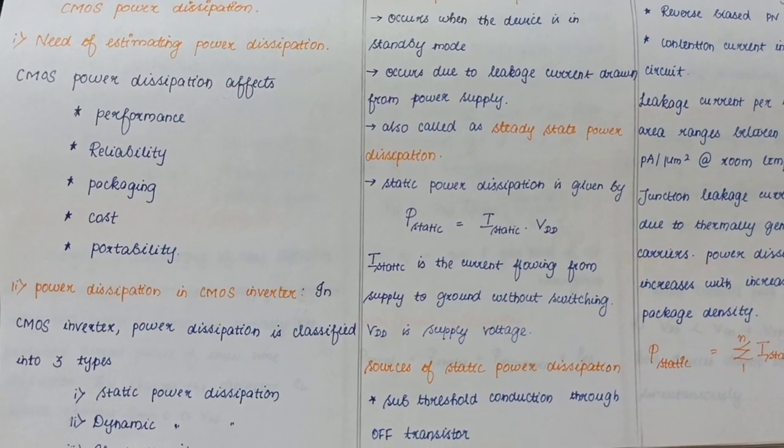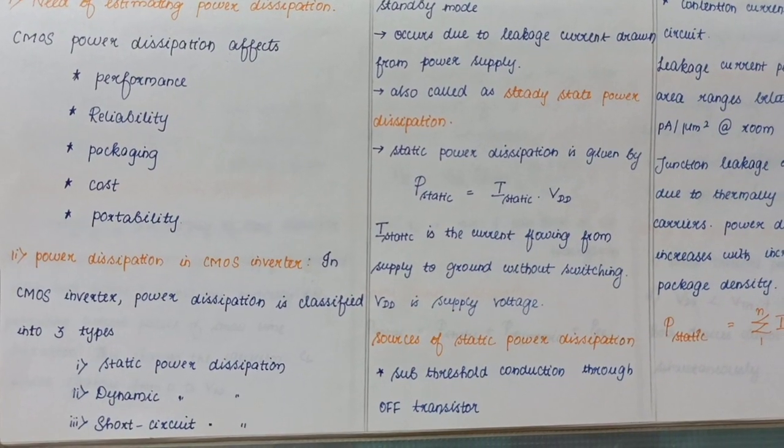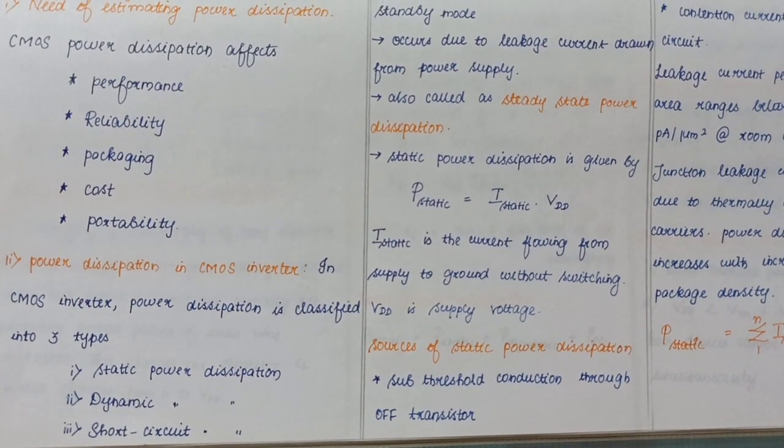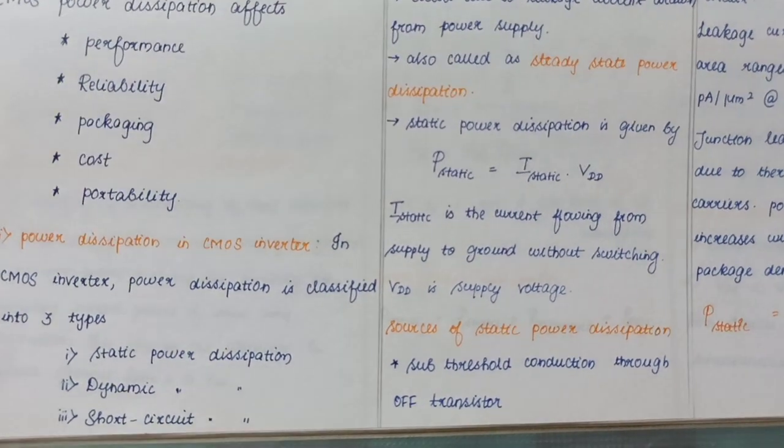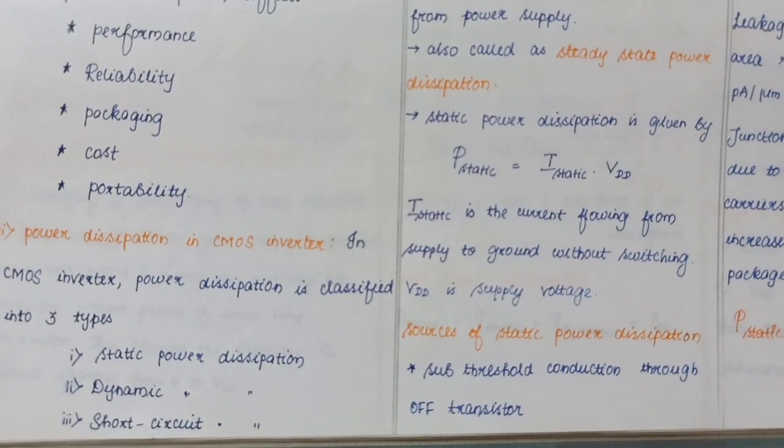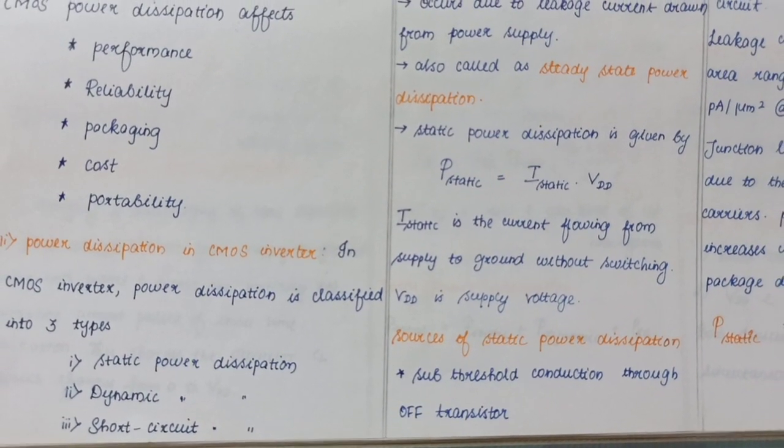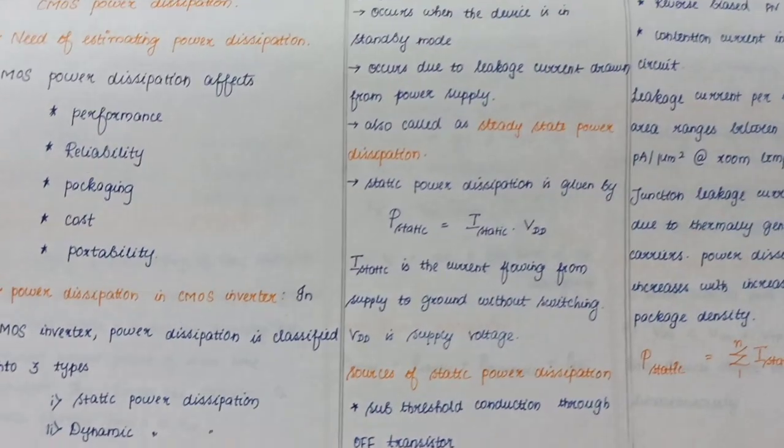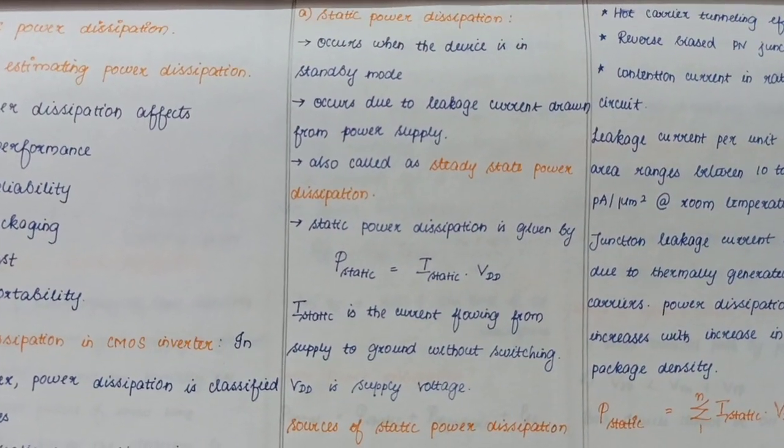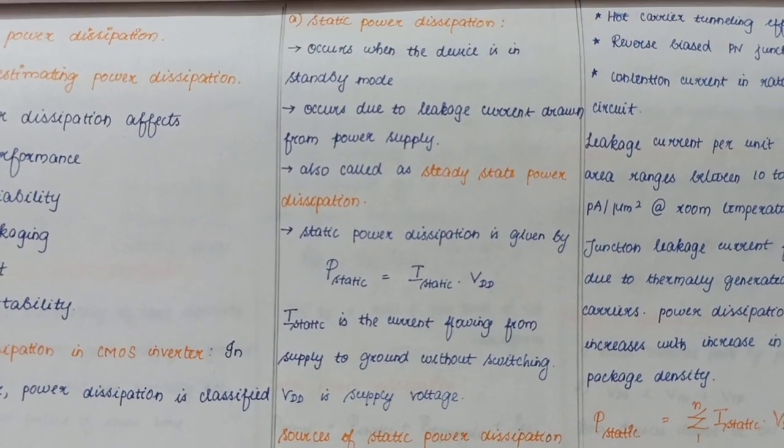We have three different types of power dissipation. First one is static power dissipation, second is dynamic power, and third one is short circuit power.